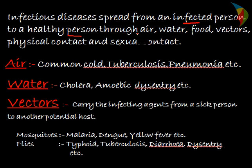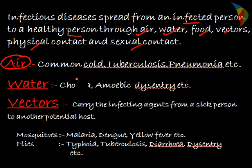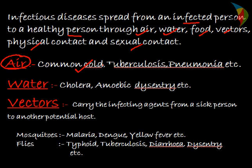Infectious diseases spread from an infected person to a healthy person, and there are different modes of transmission — through air, water, food, vectors, physical contact, and sexual contact. When a person is infected with common cold, during coughing or sneezing they exhale the bacteria causing common cold. When a healthy person inhales that air, they are likely to get common cold, tuberculosis, or pneumonia.